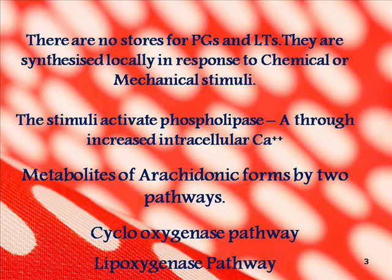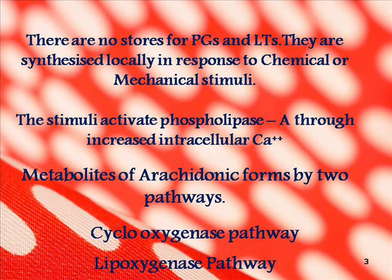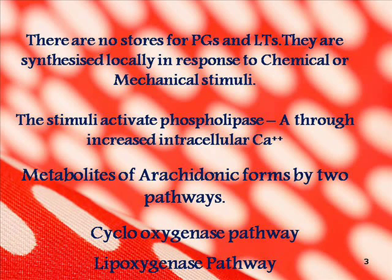Eicosanoids are synthesized locally in response to appropriate stimuli. The stimuli activate hydrolysis; specifically, phospholipids react to increase intracellular calcium. The cyclooxygenase pathway generates eicosanoids with ring structures called prostaglandins, prostacyclins, and thromboxins, whereas the lipoxygenase pathway produces open-chain compounds called leukotrienes.